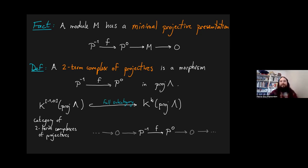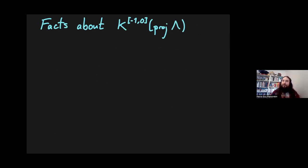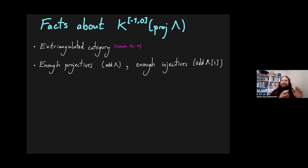It's a full subcategory of a triangulated category, so it inherits a lot of its properties. So let's talk about some facts about this category. First thing, it's X-triangulated in the sense of Nakaoka-Palu. That's just because it's a full extension closed subcategory of a triangulated category. So if you don't know what X-triangulated means, just think full extension closed subcategory of a triangulated category. That's all we need.